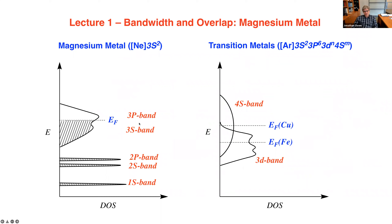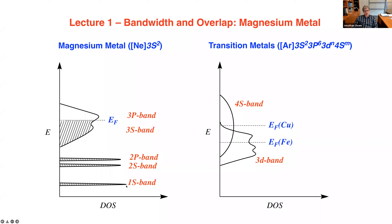What causes the width? The width tells you something about the bonding in the material. We looked at magnesium metal to illustrate this. The 3p band, the 3s band, and the 2p, 2s, and 1s bands all have very different widths. This width tells you about the degree to which those orbitals make bonds. Of course, 1s, 2s, and 2p are core levels — they don't make bonds.